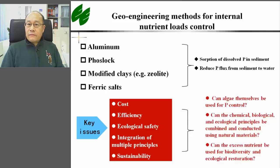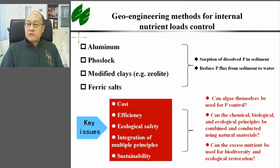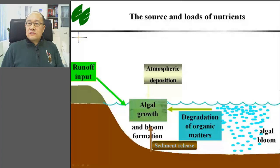For instance, we can ask whether algae themselves can be used for P control. Can chemical, biological, and ecological principles be combined and conducted using natural materials? Is it possible to use natural forces and materials so that excess dissolved nutrients can be used for biodiversity and ecological restoration? There are two major sources of nutrients for lakes: external loads such as runoff and atmospheric deposition, and internal loads from sediment and suspended particulate phosphorus, including algae cells.